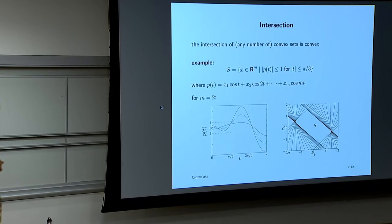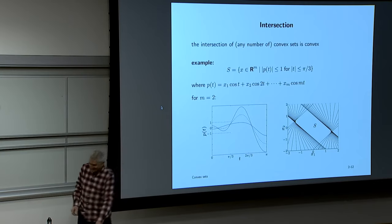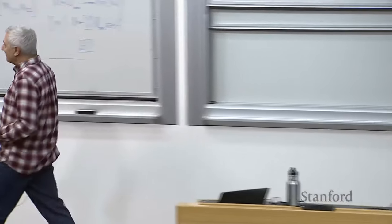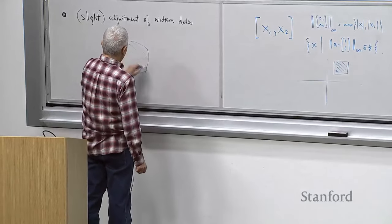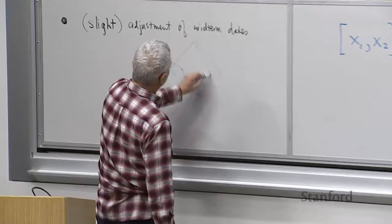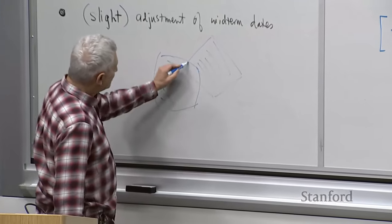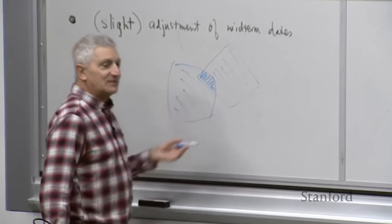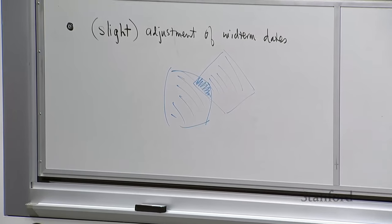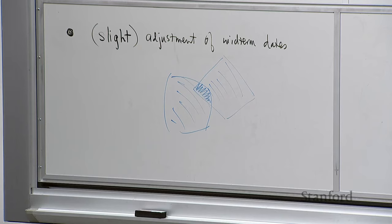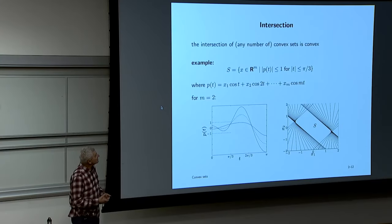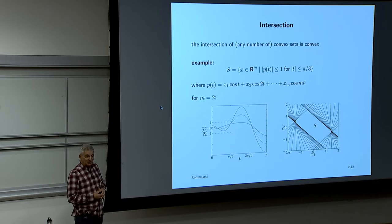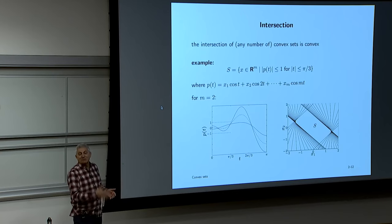The intersection of convex sets is convex — geometrically obvious and a three-line proof confirms it. This extends to infinite intersections: the intersection of infinitely many half spaces is convex. For example, here's a convex set and another one; their intersection is this region, and your eyeball tells you it's convex.